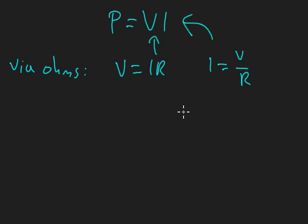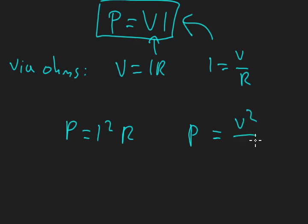We can substitute either one of those into the power equation and we get two basic variations. Power equals I²R by substituting the second equation in. And by substituting V = IR, we get P = V²/R, or P equals V times V over R equals V² over R.